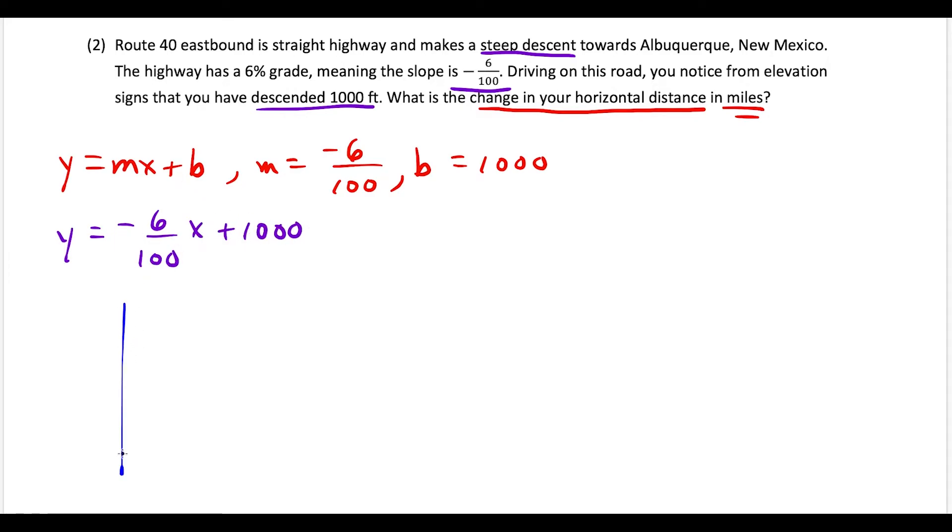Let's sketch this line. On the xy-axis, we have a y-intercept of 1000, which puts us at the point (0, 1000). The car is dropping at a rate of -6/100. When we notice the sign, we've dropped 1000 feet, so now we're at the point (x, 0) because we've dropped 1000 feet onto the x-axis where the y value is zero.